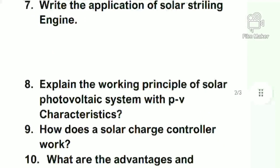Number eight: explain the working principle of a solar photovoltaic system with PV characteristics. The solar photovoltaic system working principle should be explained along with PV characteristics — P means power and V means voltage. You have to draw those two characteristics on a graph. This is not a difficult question at all; it is quite easy.